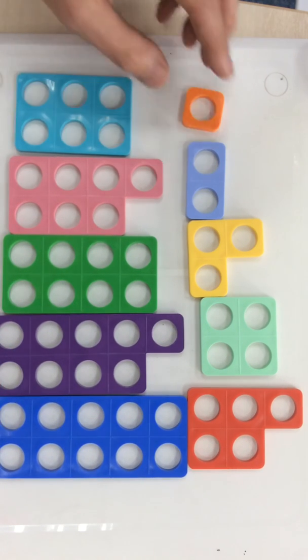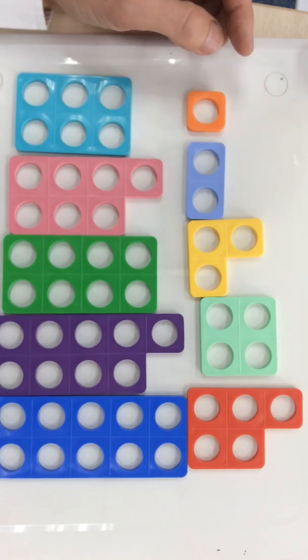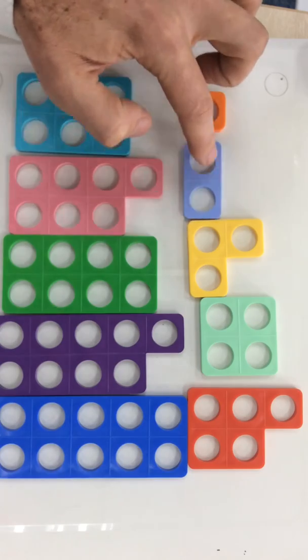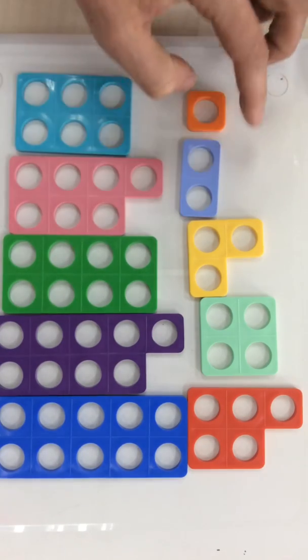So I can see which numbers are even numbers because they don't have any lumpy bits on them. Here we've got 2 and it doesn't have a lump on top.